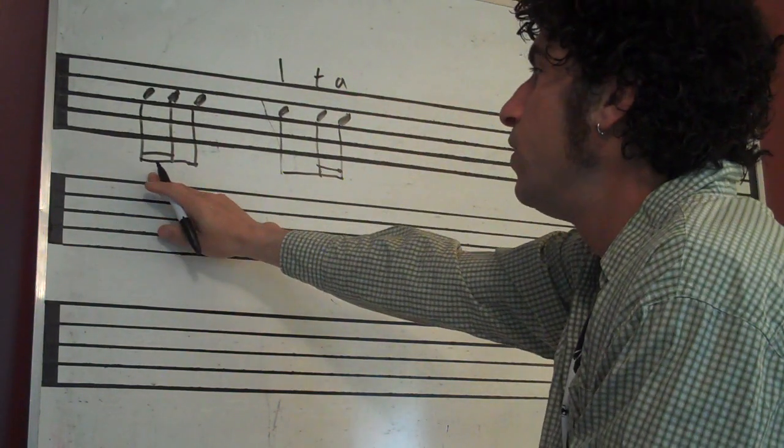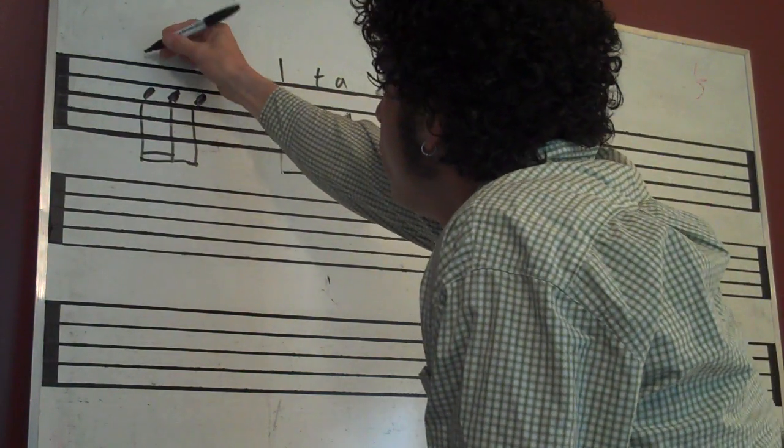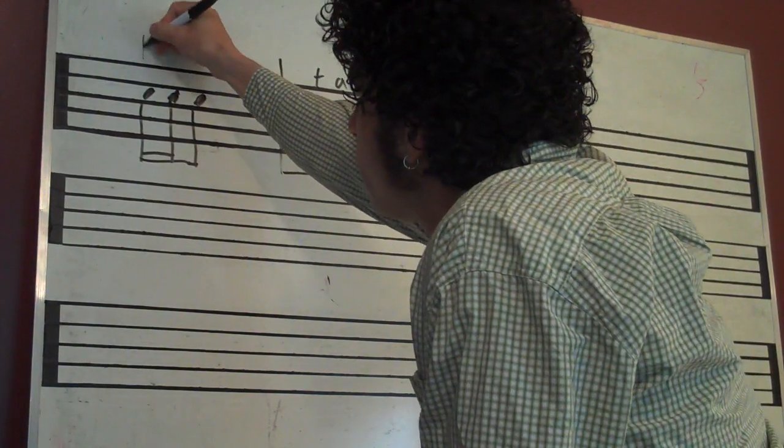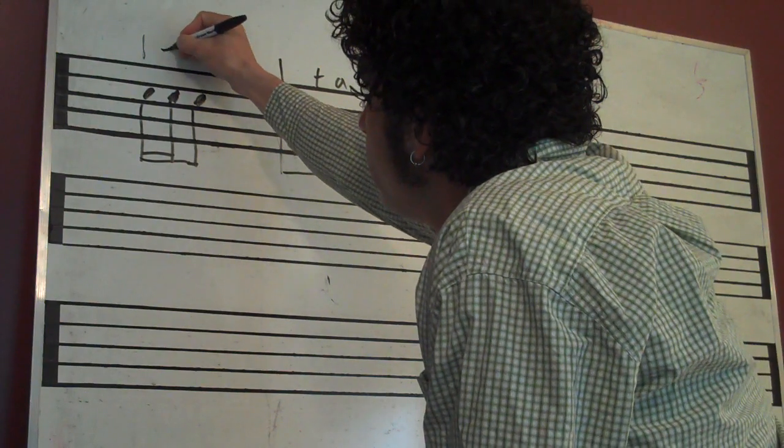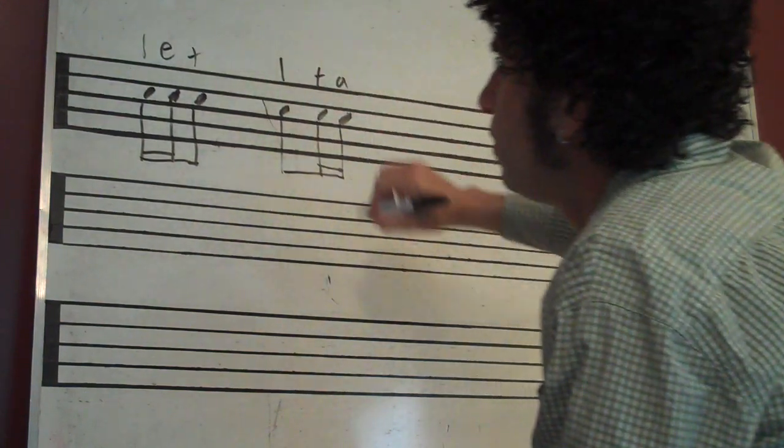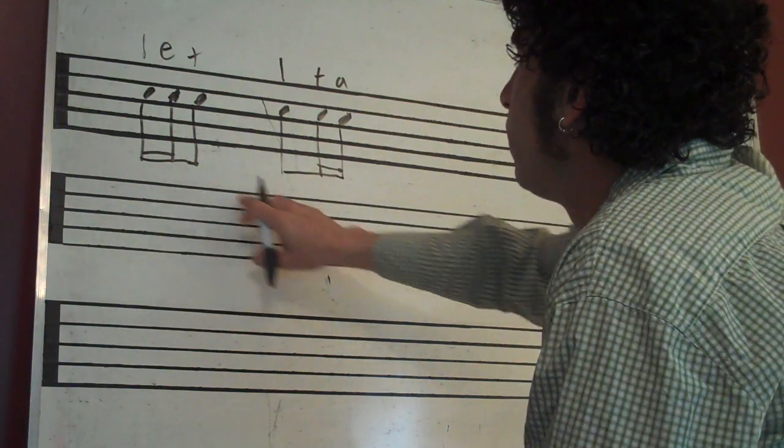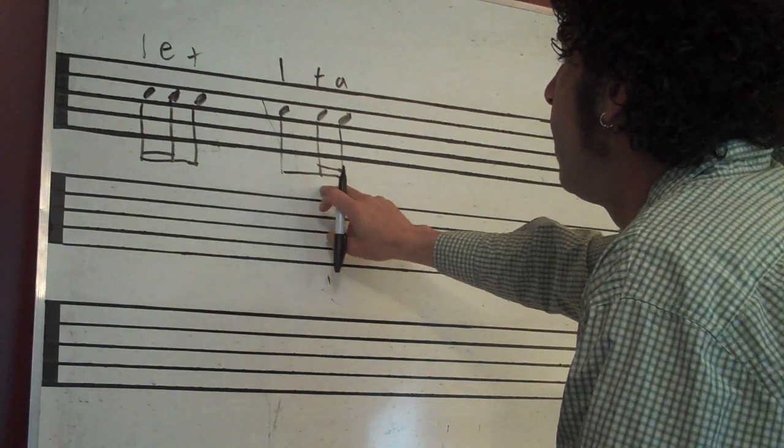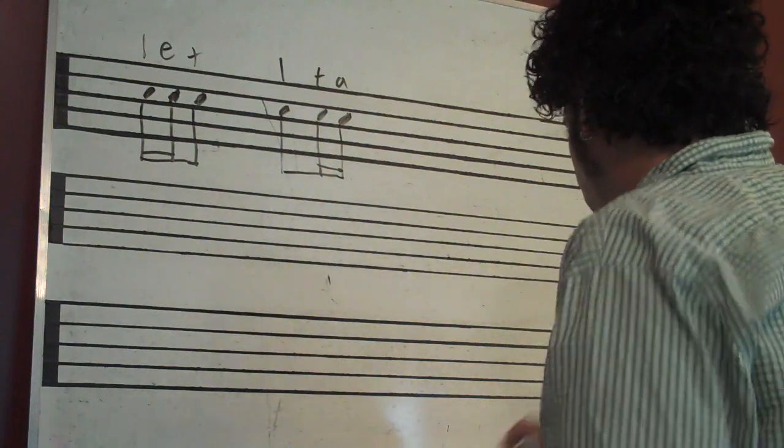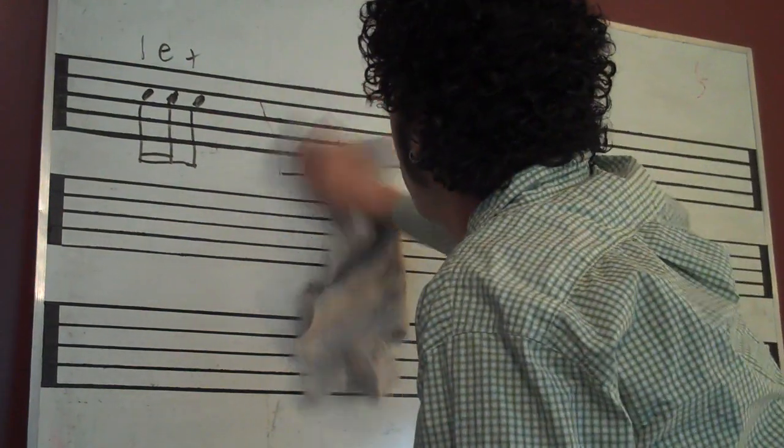And then this one, this is the new one today. So we'd be counting this as one e and, all right? One e and. One and a. We should already know that one. Okay.